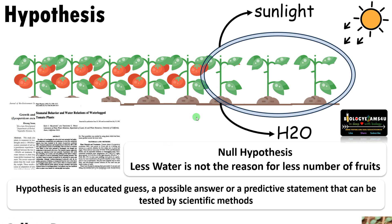A researcher starts with null hypothesis. As the word indicates, it is the hypothesis that the researcher tries to nullify — it is a negative statement. For example: less water is not the reason for less number of fruits in the case of these plants. In research, we begin with null hypothesis as it helps to avoid false positives. It helps the researcher avoid bias towards the preferred outcome, and allows objective evaluation based on evidence.